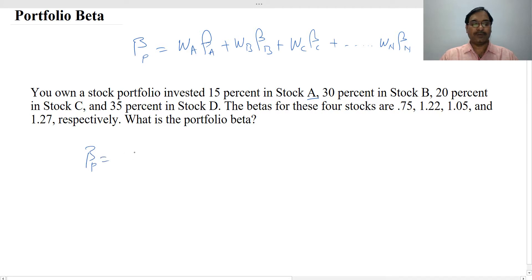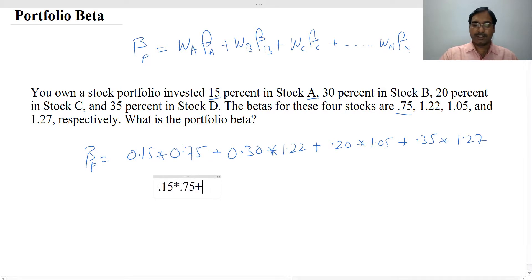For beta of portfolio, this equals weight of A, that is 0.15 times beta of A, that is 0.75. Here are the beta values and here are the weights. Then this plus in stock B, 0.30 times 1.22 plus 0.20 into 1.05 plus 0.35 into 1.27. So this gives you 0.15 into 0.75 plus 0.3 into 1.22 plus 0.2 into 1.05 plus 0.35 into 1.27.